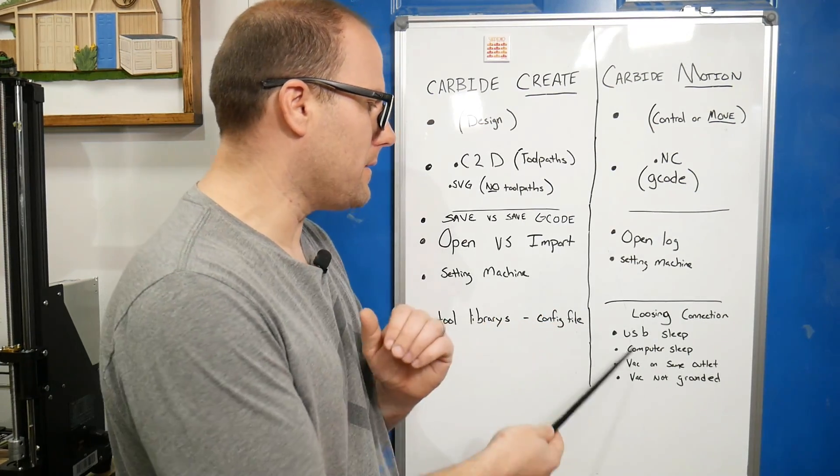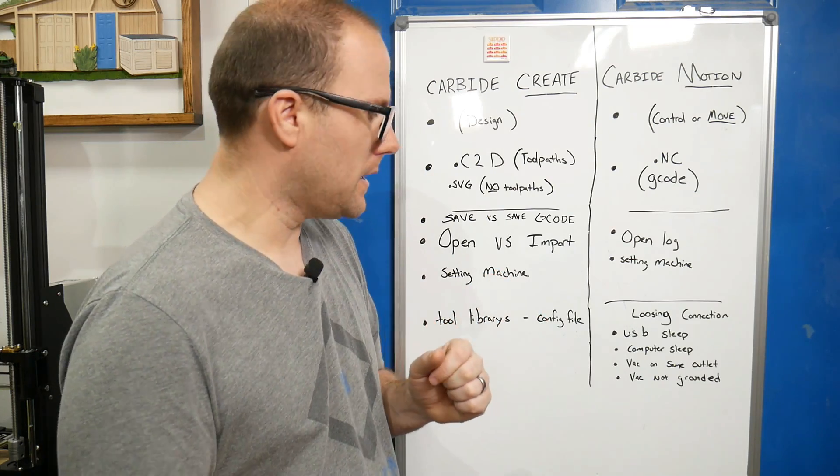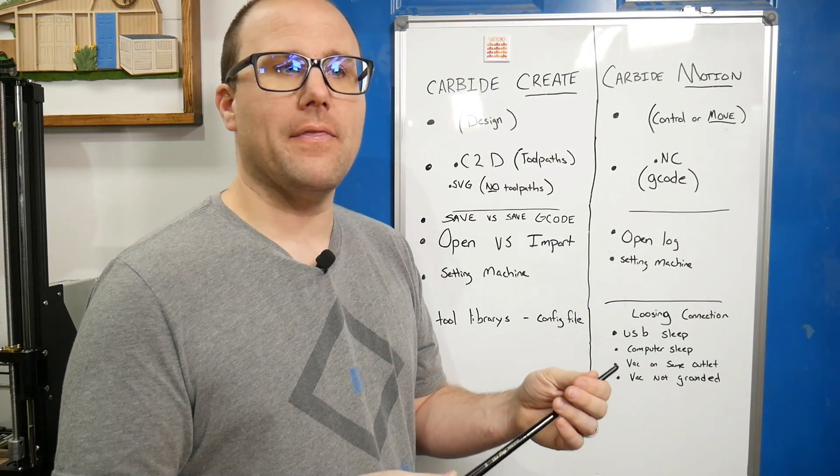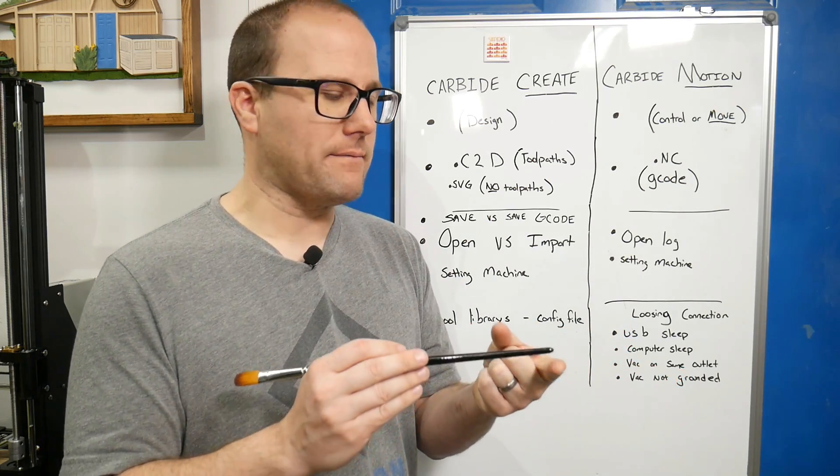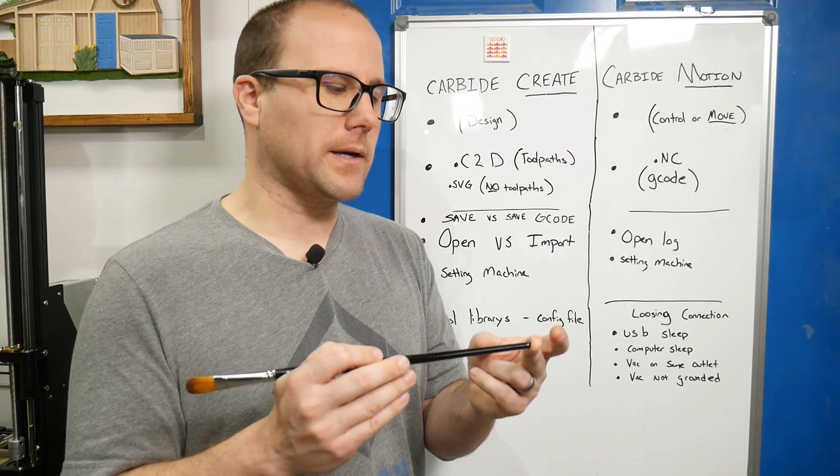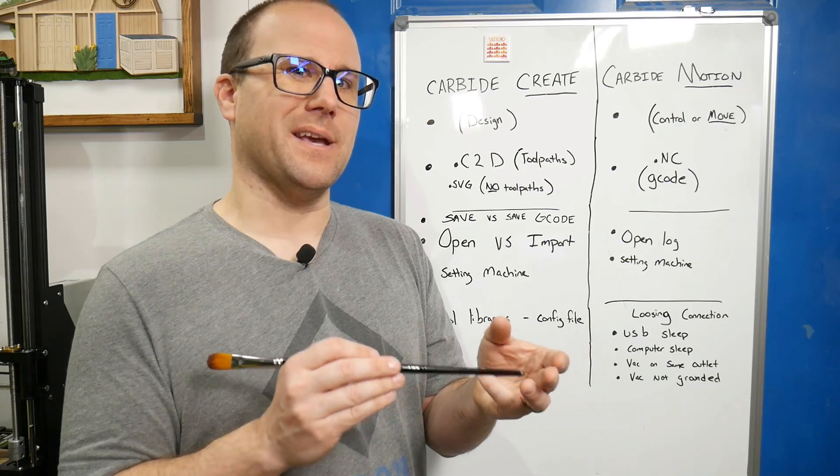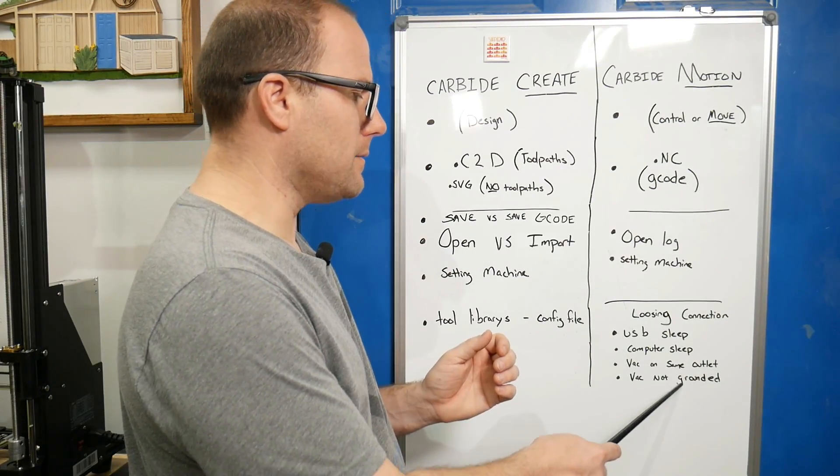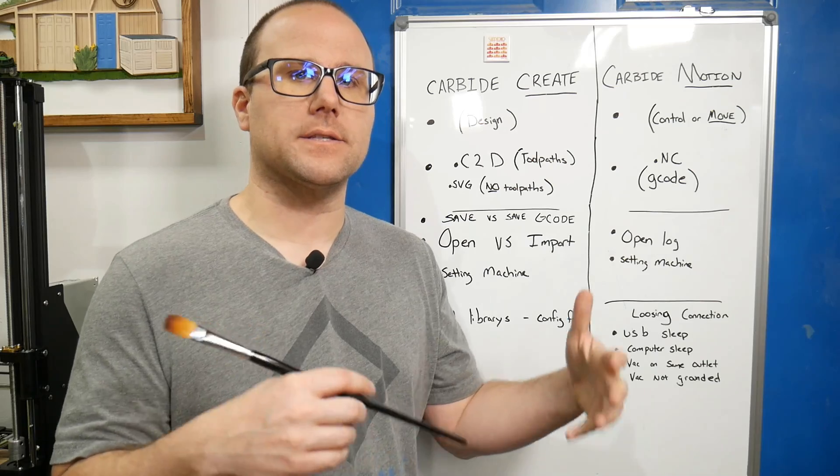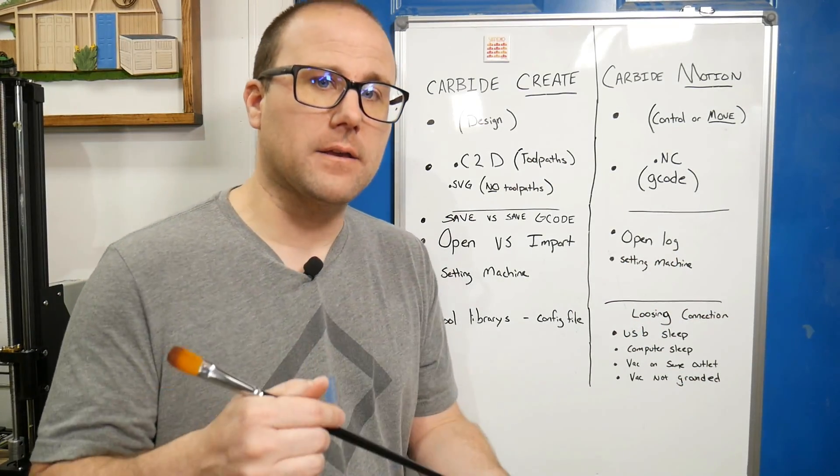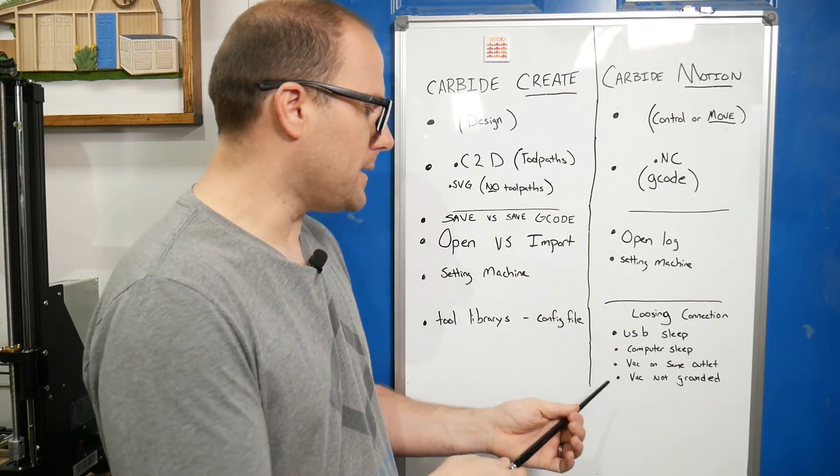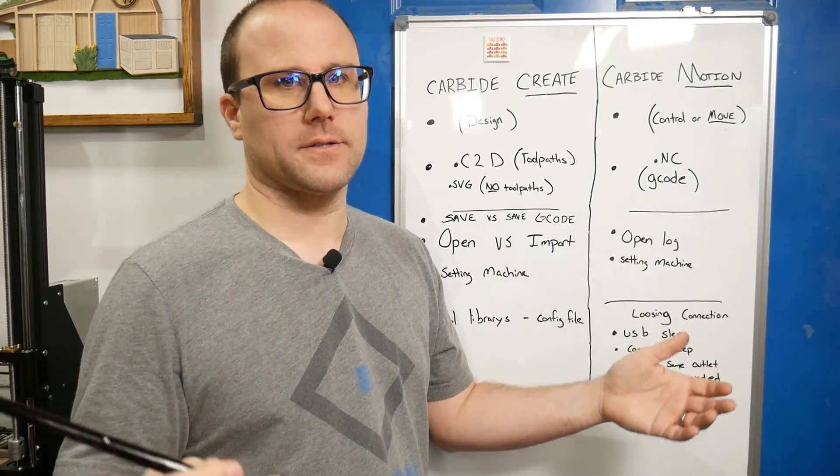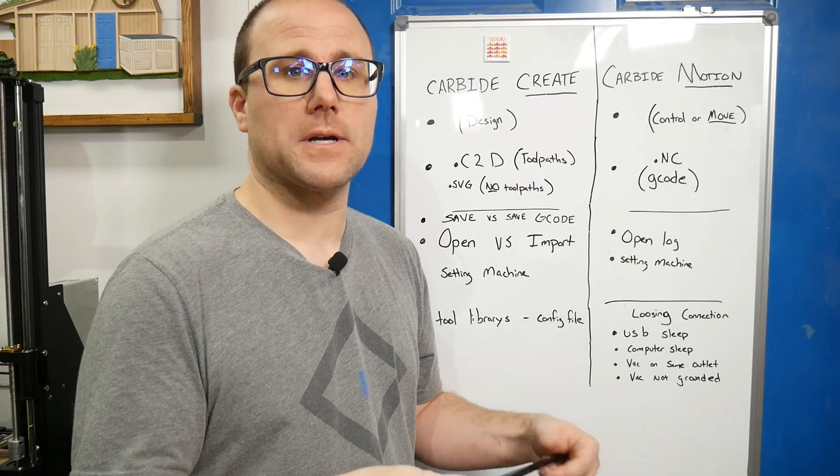The last thing about losing connection has to do with a vacuum. A lot of people have the vacuum, Shapeoko, and router all on the same outlet. That will interfere with the electronics. I try to have my vacuum on a separate breaker and my Shapeoko and router on a separate breaker. Also, the vacuum not being grounded. Try running it without the vacuum. If it works without the vacuum, it means static electricity is being built up and your vacuum is sending that to the electronics. Use a grounding wire through your vacuum to stop that static electricity.